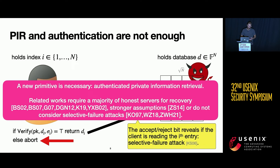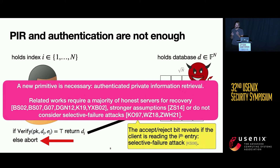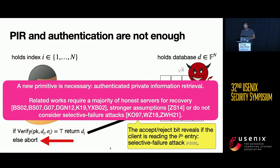So we need a new primitive that has privacy and integrity at the same time. We are not the first to think about integrity in the private information retrieval setting, but the related works have different goals or different assumptions, or they don't target the attacks we'd like to target.